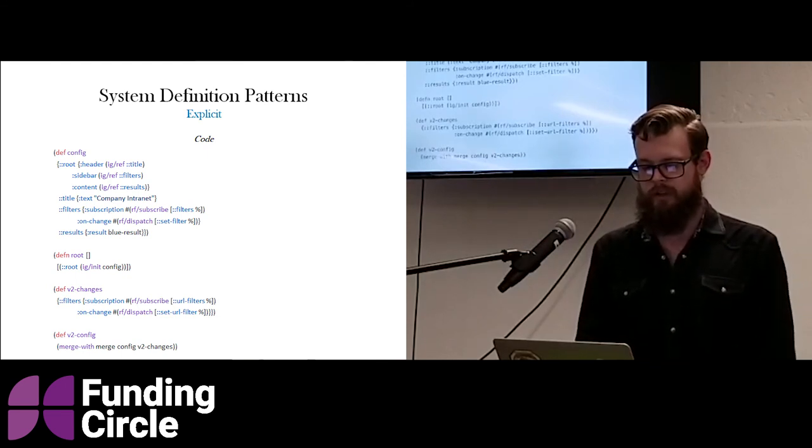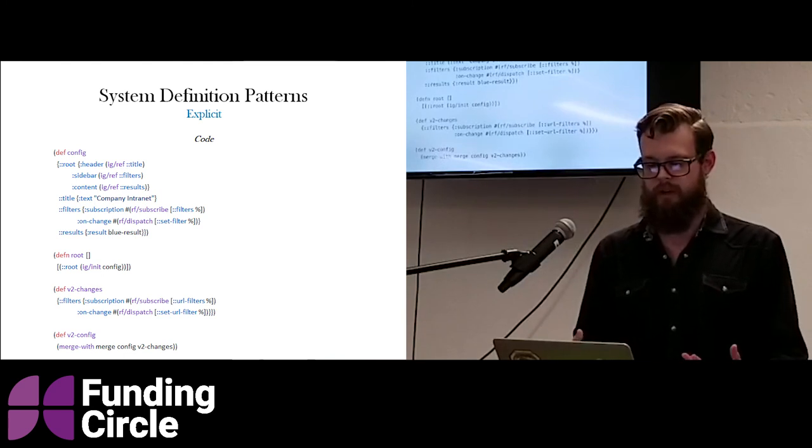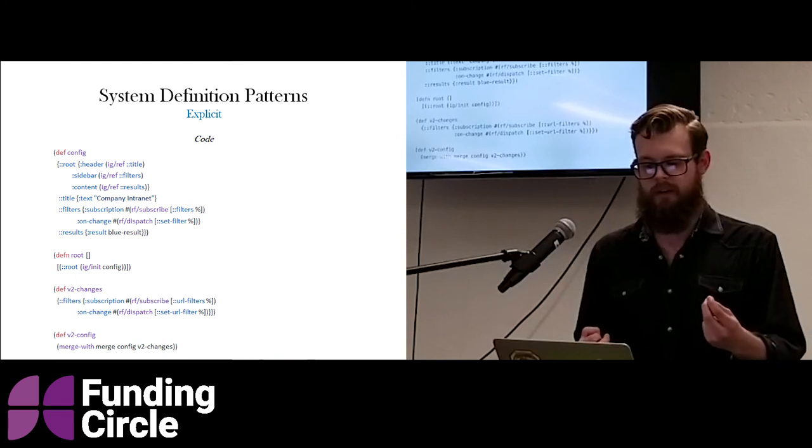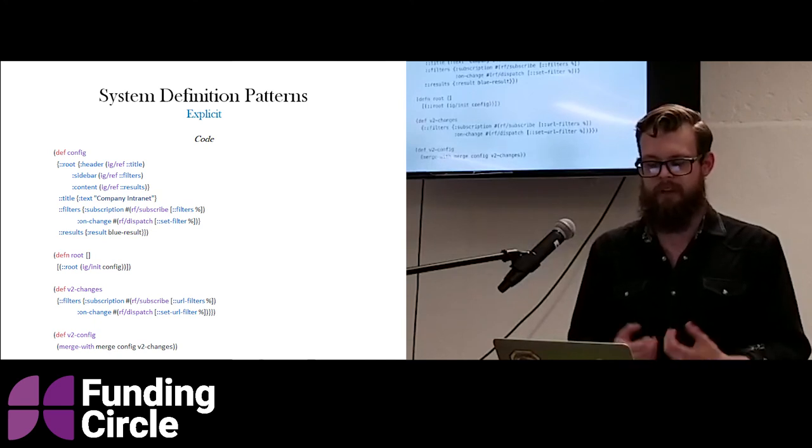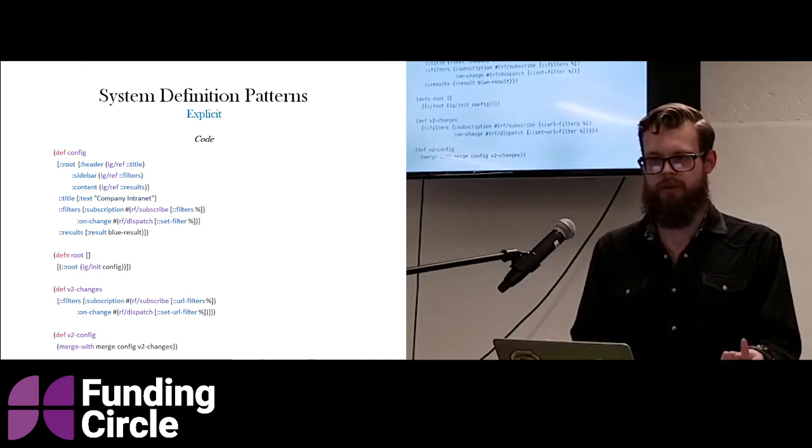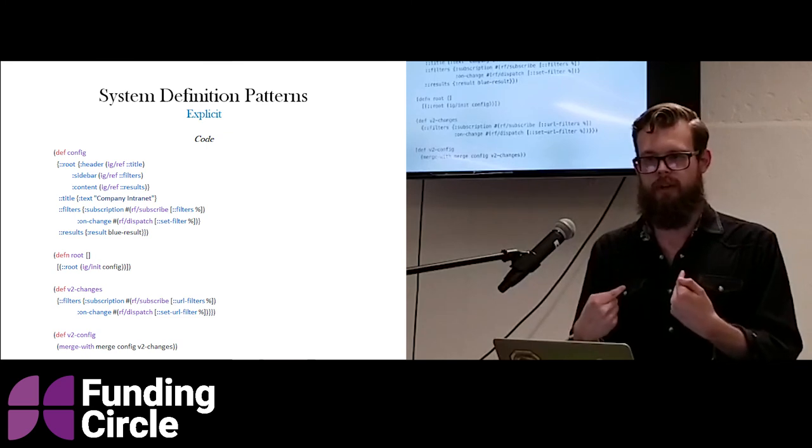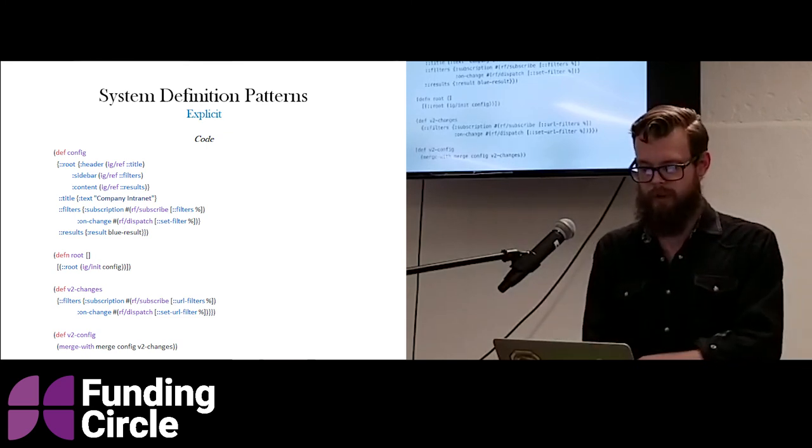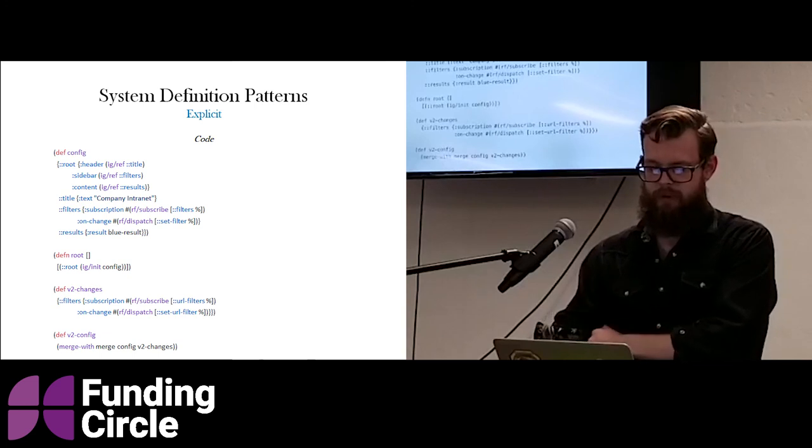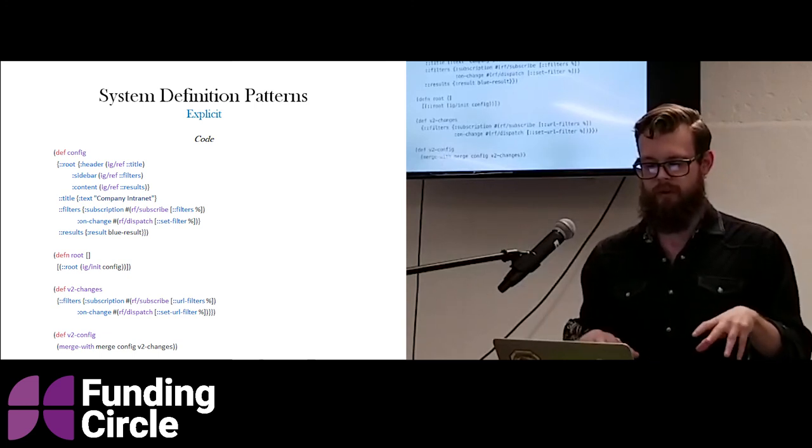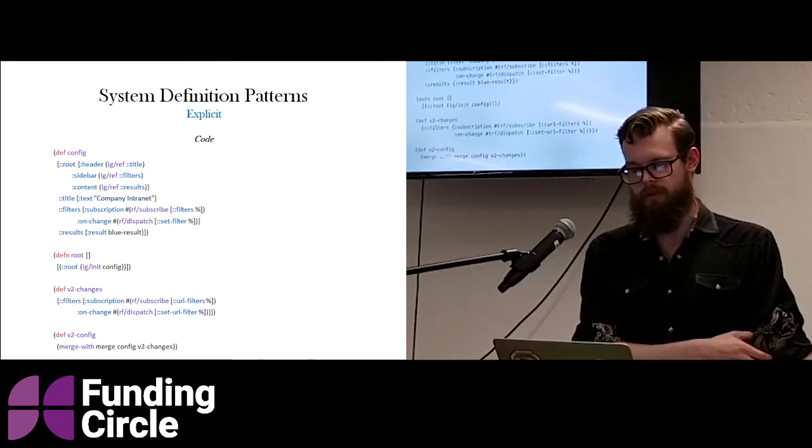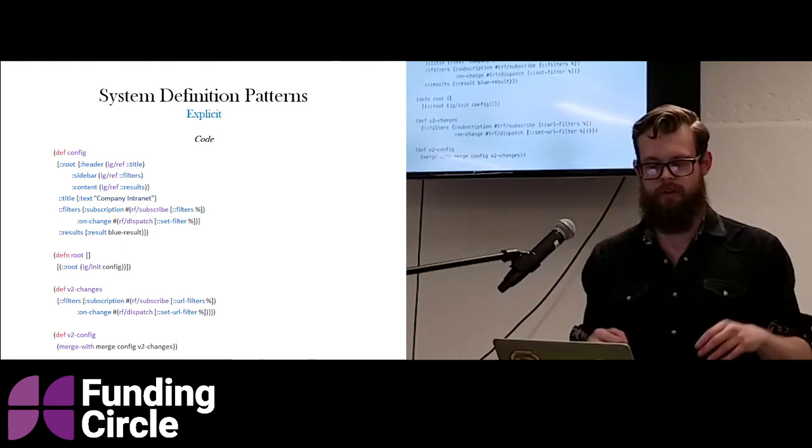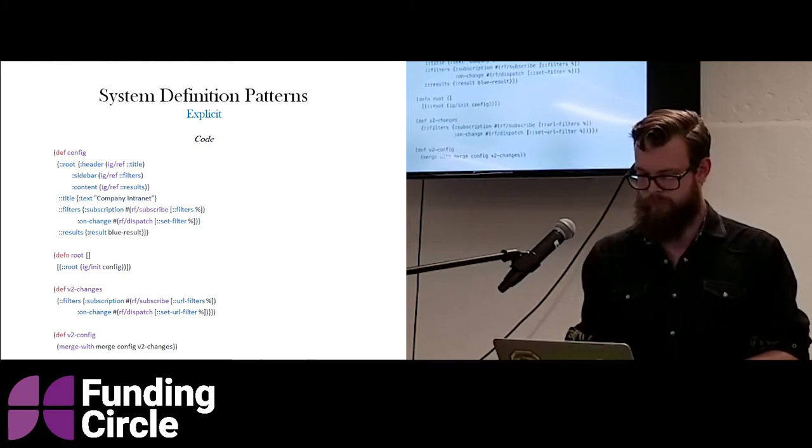And you can see this is what the actual code looks like in our applications. We use this library called integrant. So, we pass in the config to integrant init, and then it does all the wiring up stuff for us. And then, at the end, it just gives us back all the components in a map. So, we take the root component out, and we render it, and it has all the other components linked up already. The only thing I left out of this library were the multi-methods to implement the hooks for all these keywords.